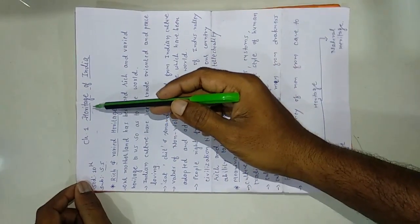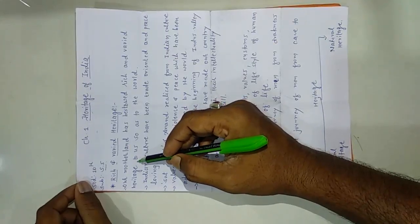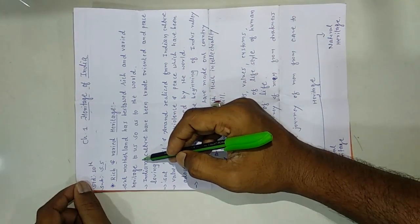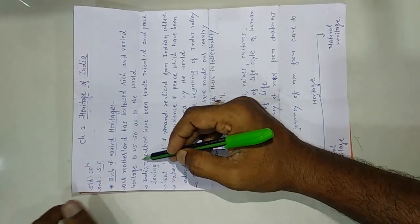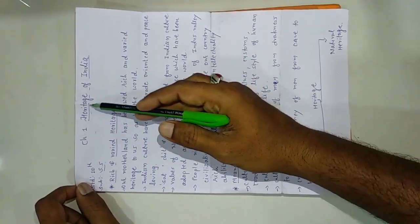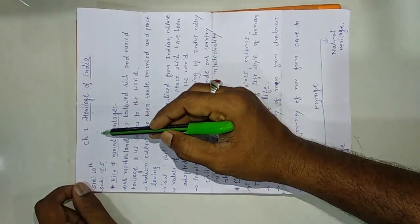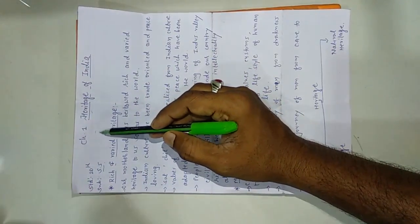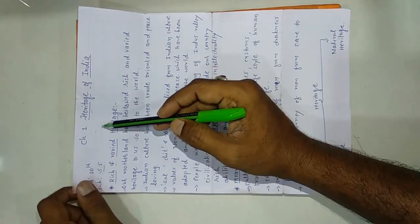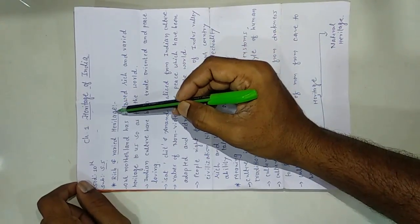Heritage means whatever we obtain or get from generation to generation. For example, in many families, all family members may have specs because they inherit that as a physical trait. So heritage can be physical as well as materialistic. We have also seen that diseases can be inherited from generation to generation. Materialistic heritage means property, money, land, etc., passed down from generation to generation.